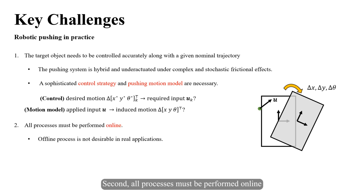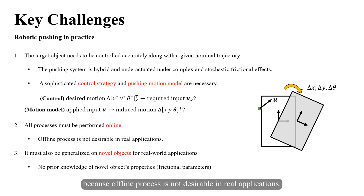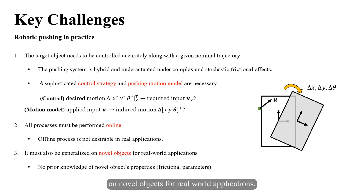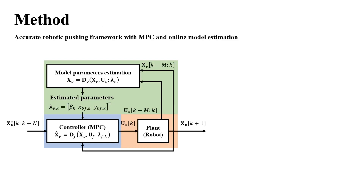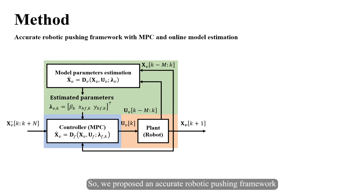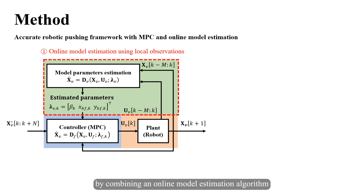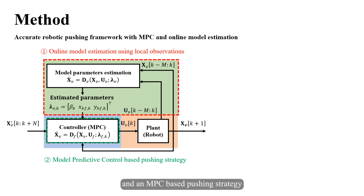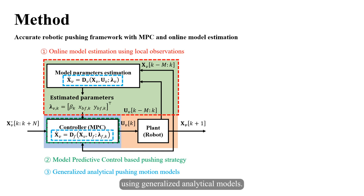To adapt the robotic pushing skill in real applications, three requirements must be satisfied. First, accurate trajectory tracking. Second, all processes must be performed online, because offline processing is not desirable in real applications. Third, the robotic pushing framework must be generalized to novel objects for real-world applications. We proposed an accurate robotic pushing framework by combining an online model estimation algorithm and an MPC-based pushing strategy using generalized analytical models.